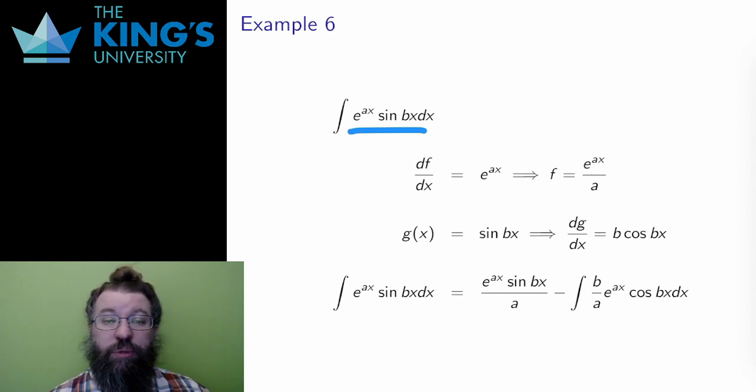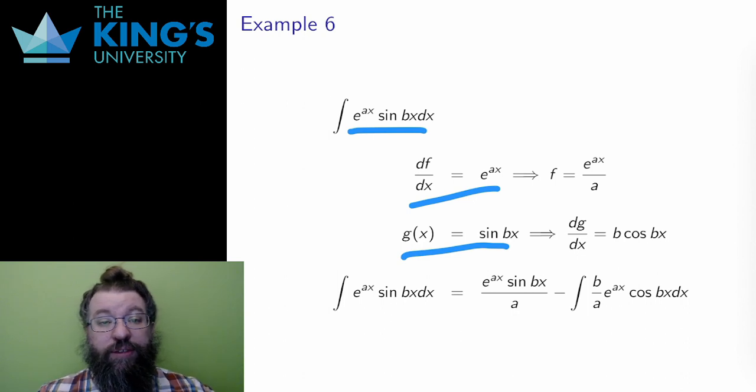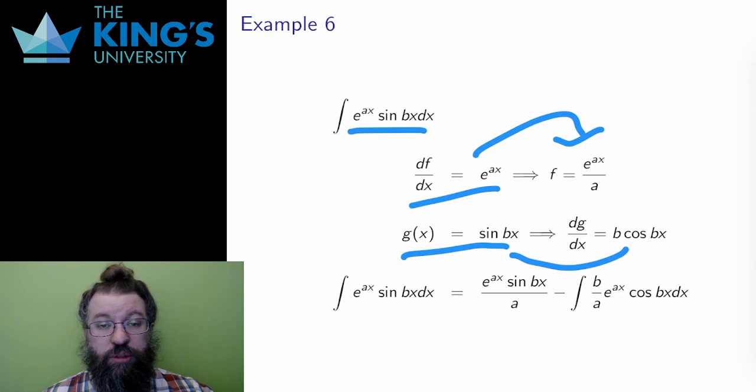In this, a and b are some real number constants. So I have a product, and I choose to set df/dx as e to the ax, and g as sine bx. The antiderivative of e to the ax is e to the ax over a, which is a substitution rule integral if you want to do it. And the derivative of sine bx is b times cos bx, which is a chain rule calculation.